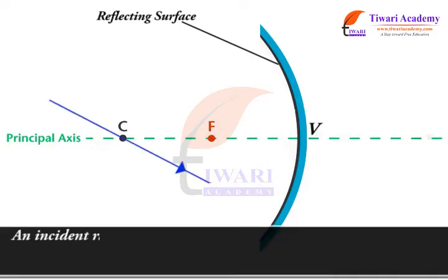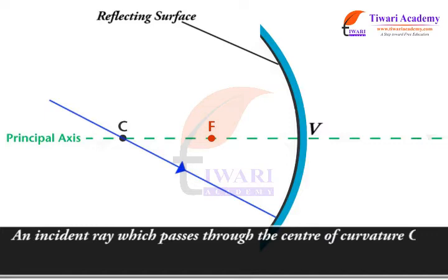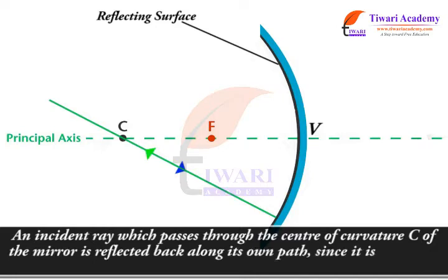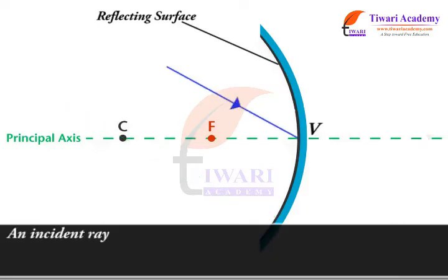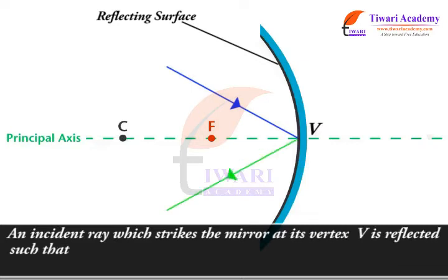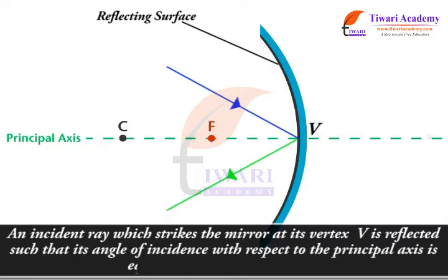An incident ray which passes through the center of curvature C of the mirror is reflected back along its own path since it is normally incident on the mirror. An incident ray which strikes the mirror at its vertex V is reflected such that its angle of incidence with respect to the principal axis is equal to its angle of reflection.